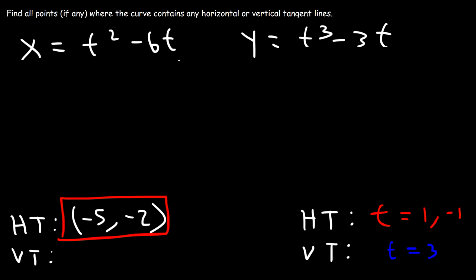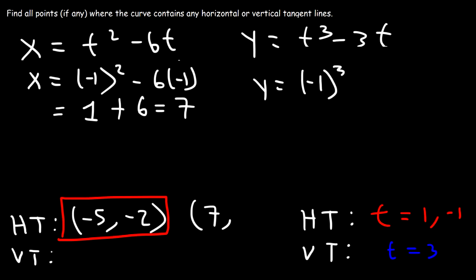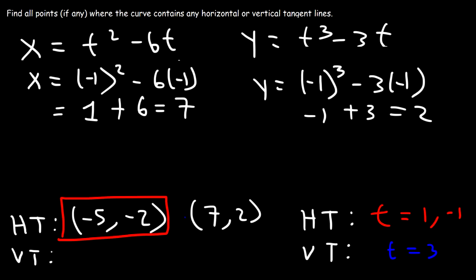Now when t is negative 1: x is negative 1 squared minus 6 times negative 1. Negative 1 squared is positive 1, and negative 6 times negative 1 is plus 6, so we get 7. For y, it's negative 1 to the third power minus 3 times negative 1, which is negative 1 plus 3, giving us 2. So the second horizontal tangent line occurs at the point (7, 2).